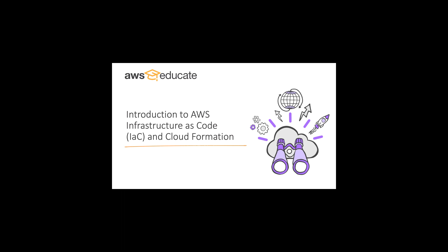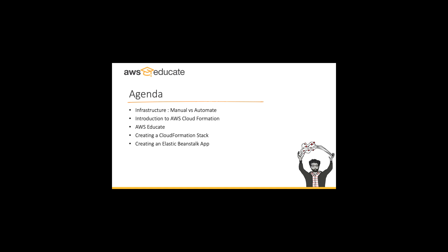Welcome to another AWS Workshop from Home. What we're going to talk about today is an introduction to AWS Infrastructure as Code and IAC CloudFormation models. I'm Andrew Hodges and I'm going to run you through this section. I'm going to talk about infrastructure, how we look at manual versus automation, how we approach AWS CloudFormation and what that means. After that, I'll hand over to Zoran, who will talk more about AWS Educate, creating a CloudFormation stack, and also show you both CloudFormation and Elastic Beanstalk.